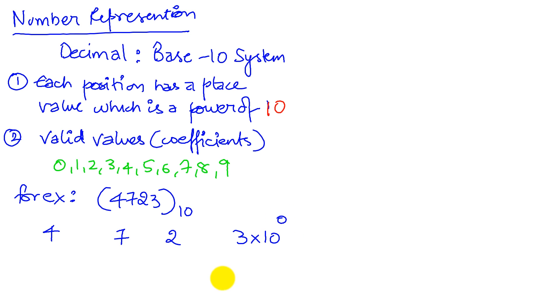2 has a place value which is 10 to the 1. 7 has a place value which is 10 to the 2. And 4 has a place value which is 10 to the 3. So when we add these together, we get 4000 plus 700 plus 20 plus 3, which is 4723 in base-10.